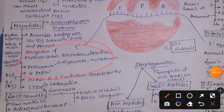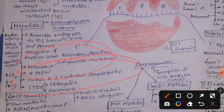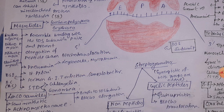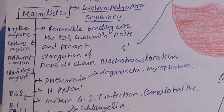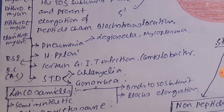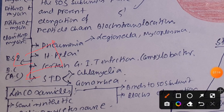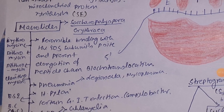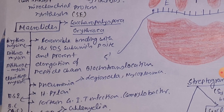Macrolides prevent pneumonia caused by Legionella and Mycoplasma, inhibit Helicobacter pylori infection, treat gastrointestinal tract infections caused by Campylobacter, and treat sexually transmitted diseases such as Chlamydia and gonorrhea. Macrolides are usually bacteriostatic but can be bactericidal in adverse conditions.